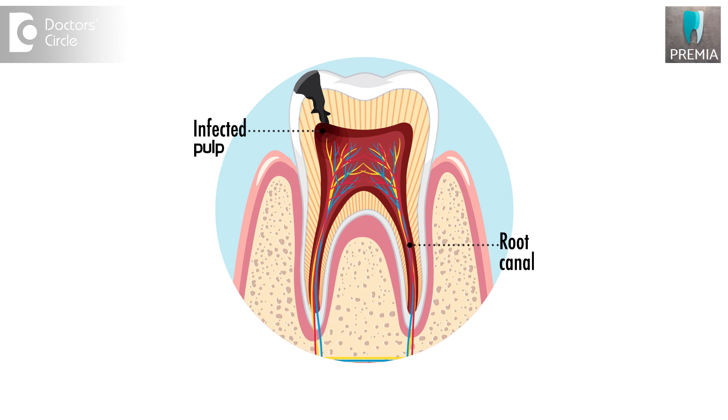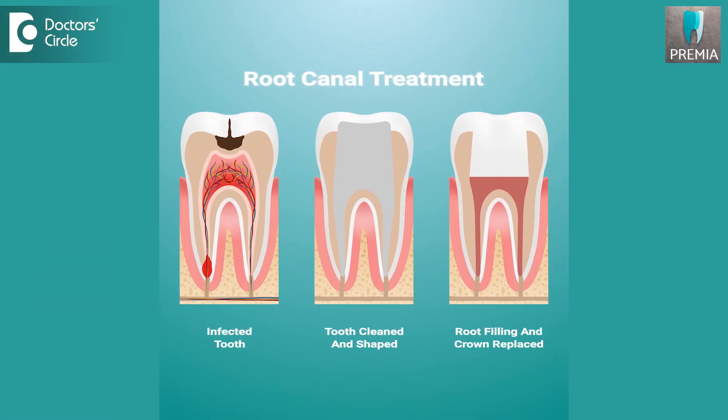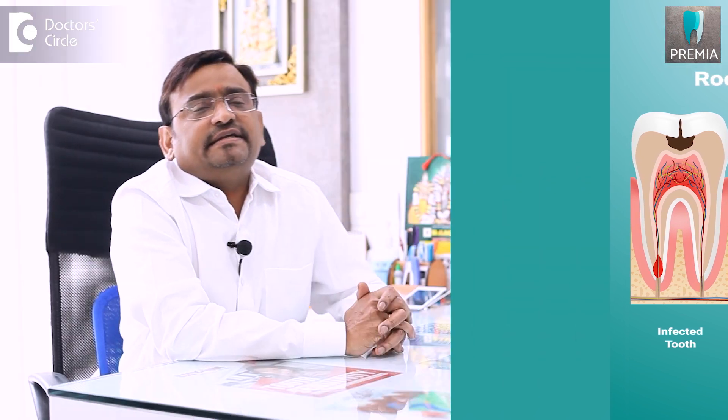Root canal is basically done when the patient has had a lot of pain and with the third layer of the tooth, that is the pulp, being involved. What they do is remove all the infected tissue and place an artificial material into it and allow it to stay in position. In such teeth, the blood supply is lost — all the nerves and blood supply within the teeth are lost — and hence the tooth becomes brittle.